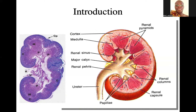You have these pyramidal-shaped structures that have the apex down here and then the base at the top. Those are the renal pyramids. Then in between the renal pyramids, you find the renal columns. As you can see, they are like the columns or pillars of a building. Then the pointed portions of the renal pyramids are called the papillae. You can see the collecting system where you have the minor calyces, followed by the major calyx, the renal pelvis, and then the ureter.